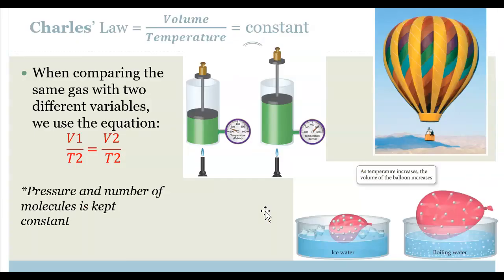For Charles' Law, we're looking at volume over temperature will be equal to a constant. This means that volume and temperature are directly related to one another. As volume increases, temperature also increases, as long as pressure and number of molecules is staying the same and kept constant.